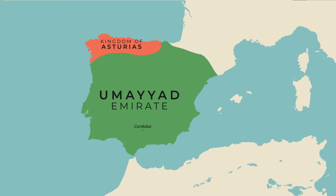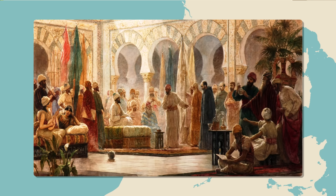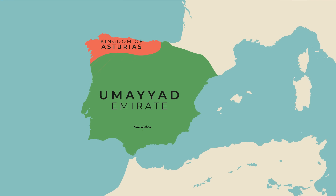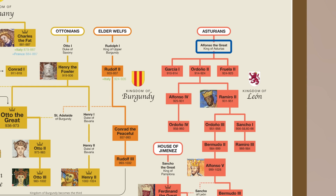The kingdom of Asturias wasn't really able to expand because the Umayyad emirate to the south was powerful and stable. However, in the second half of the 9th century, the Umayyad emirate began to dwindle as it faced many internal problems. At this point, the king of Asturias, Alfonso III, started to expand his control into the periphery of the emirate, making it the dominant Christian player on the Iberian peninsula for the next two centuries. For this, he is remembered as Alfonso the Great. Alfonso also seems to have claimed to be the emperor of Spain and the rightful heir to the Visigothic kingdom.